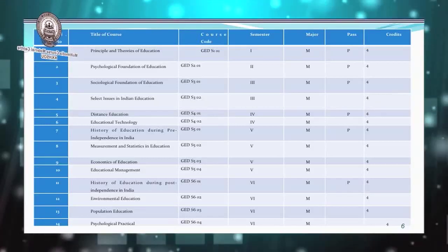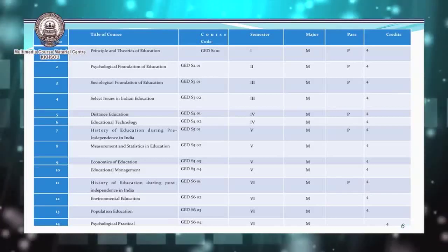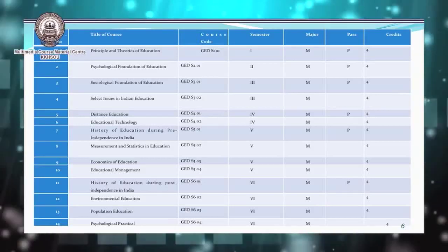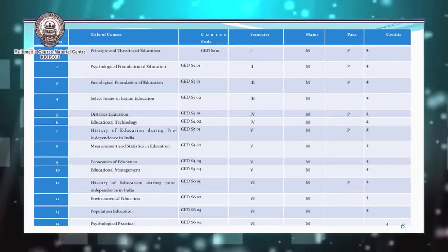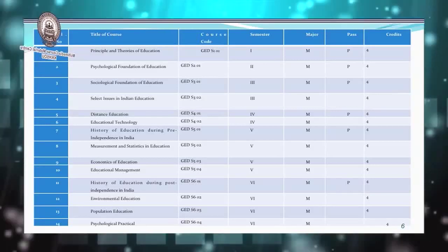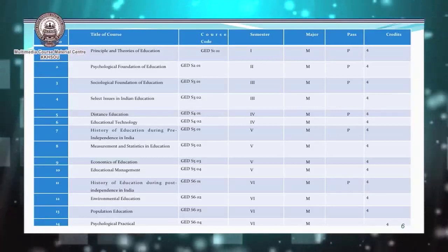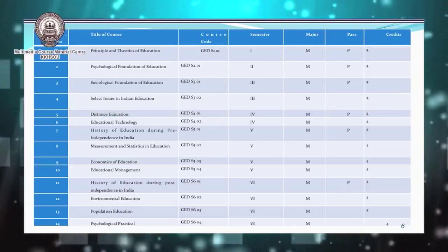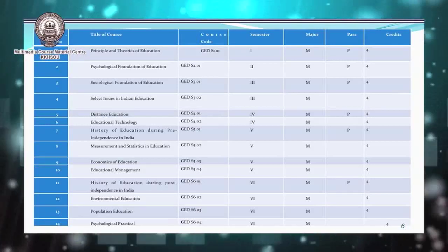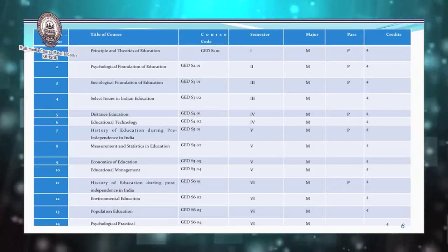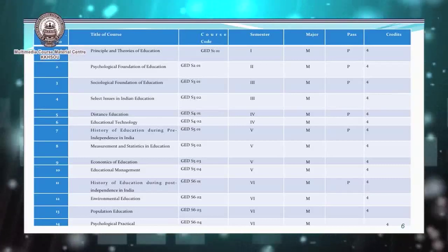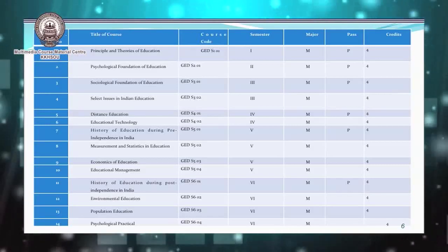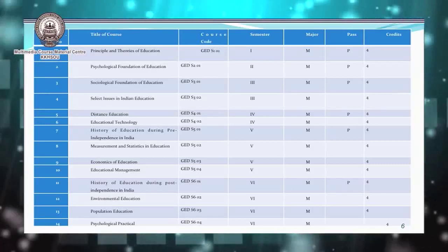In the fourth semester, along with Distance Education, learners have to take the other paper Educational Technology. In the fifth semester, the major course learners have to take other papers along with History of Education during Pre-independence India — namely Measurement and Statistics in Education, Economics of Education, and Educational Management. Along with the History of Education during Post-independence India in the sixth semester, the major course learners have to take three other papers: Environmental Education, Population Education, and Psychological Practical.